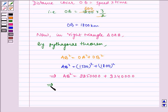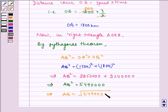This implies AB square is equal to 5490000. This implies AB is equal to square root of 5490000. This implies AB is equal to 300 root 61.